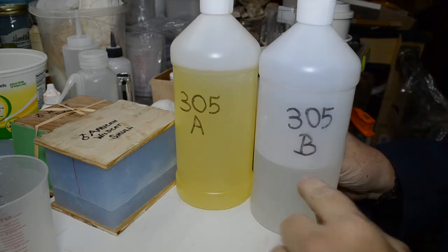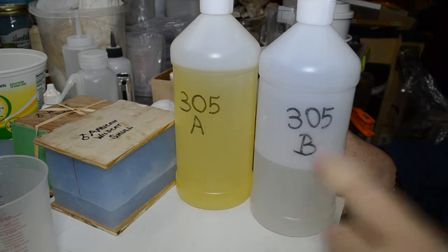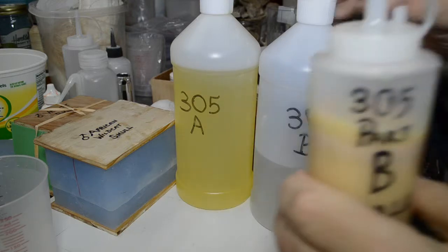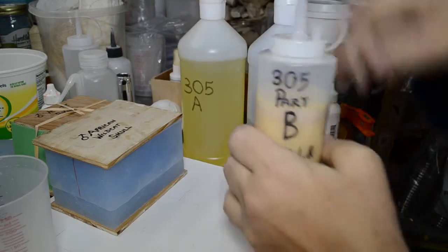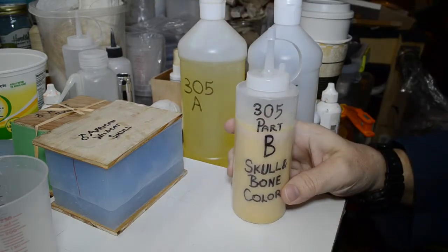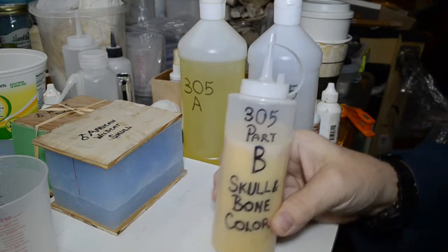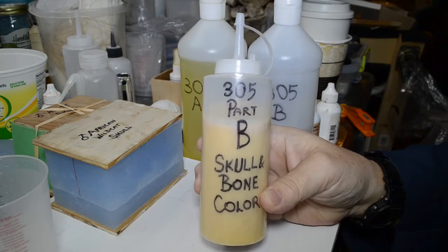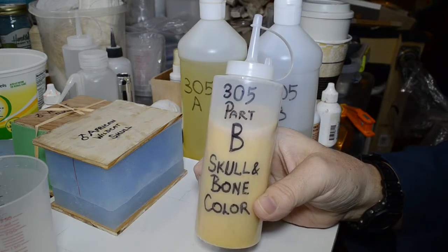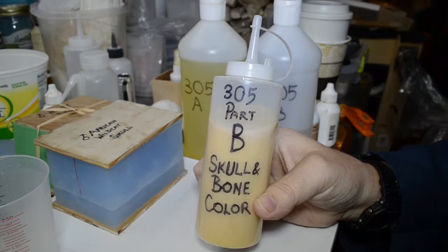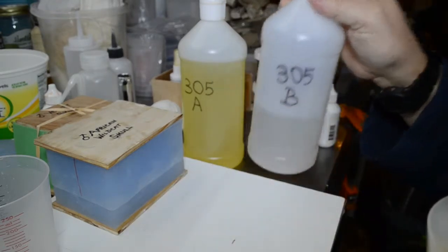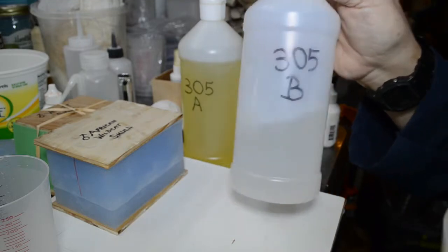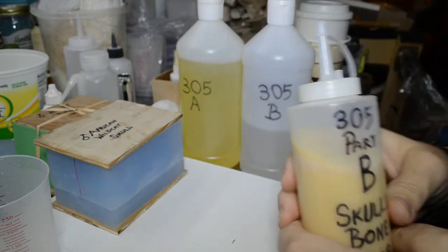Of course, you can see the 305B is a little further down than the A because I have pre-mixed up, as it says on the little bottle here, a 305 bone color in part B. You mix it in part B because the part B, as you can see in the large bottle, is clear.